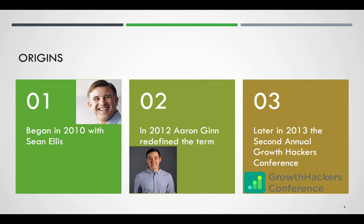The origins. The term growth hacking began in 2010 when Sean Ellis coined the term growth hacker, which he defined as someone whose true commitment is growth and all resources are directed to improving growth potential. The term was expanded by Andrew Chen, who wrote an article titled 'Growth Hacker is the New VP of Marketing.' By 2012, Aaron Ginn noted that a growth hacker is considered someone who has a mindset of data, creativity, and curiosity.